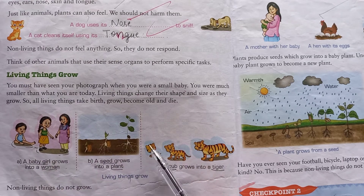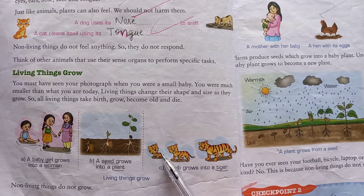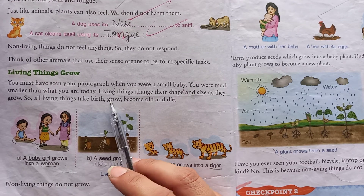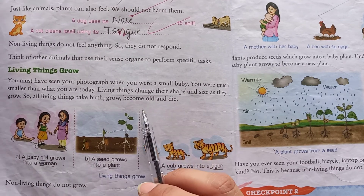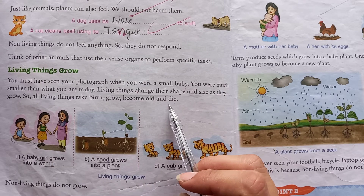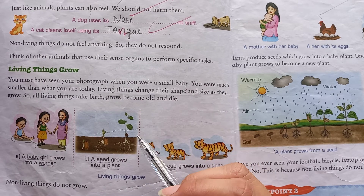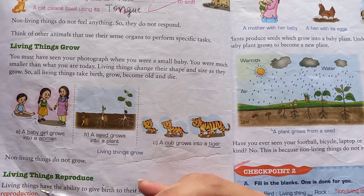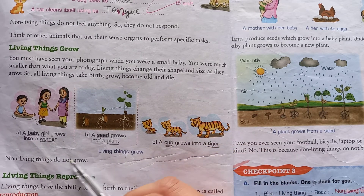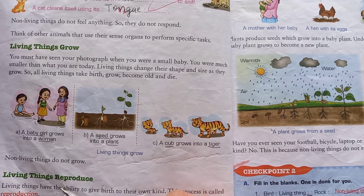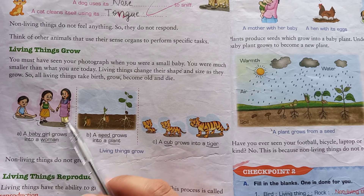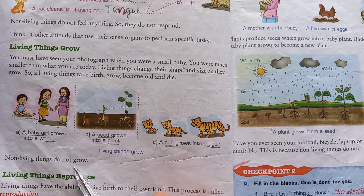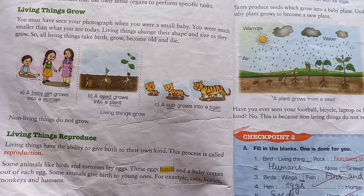All living things take birth, grow, become old, and die. But non-living things don't grow. The non-living things do not grow, move, or breathe.